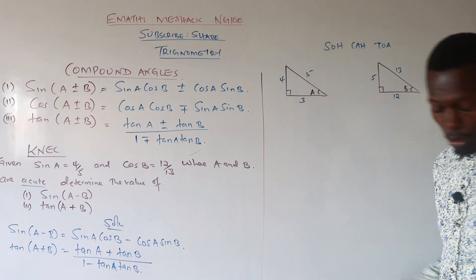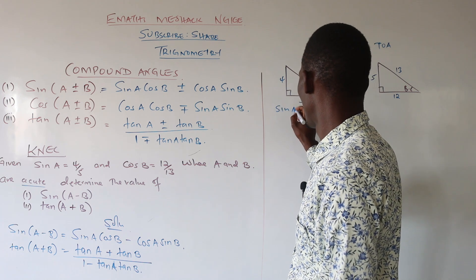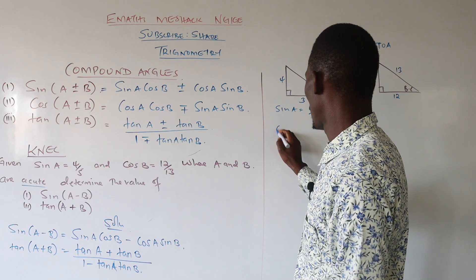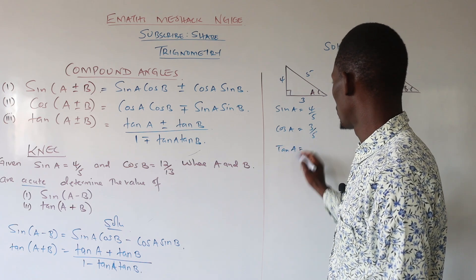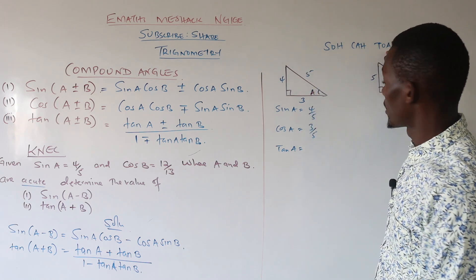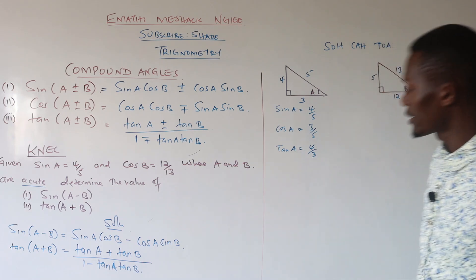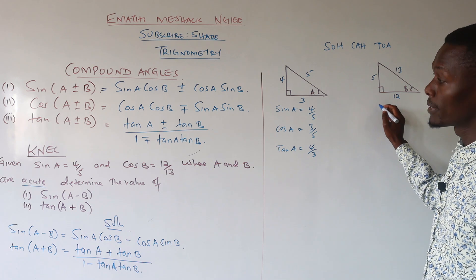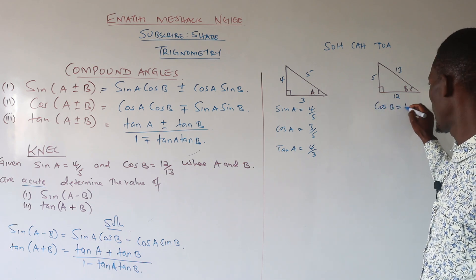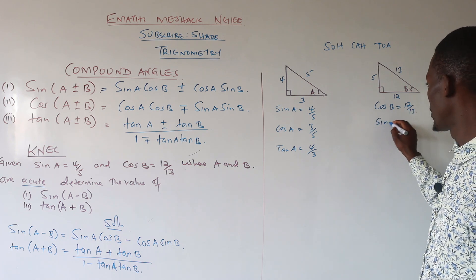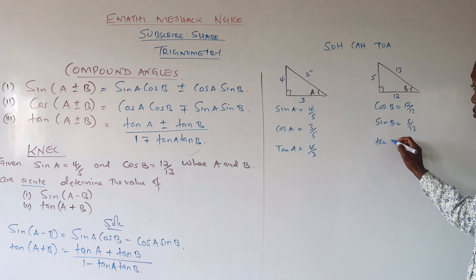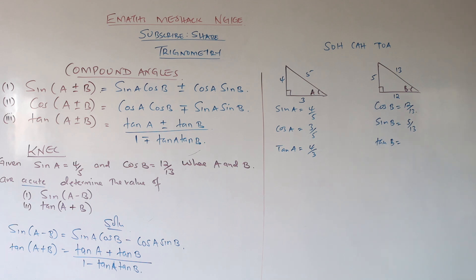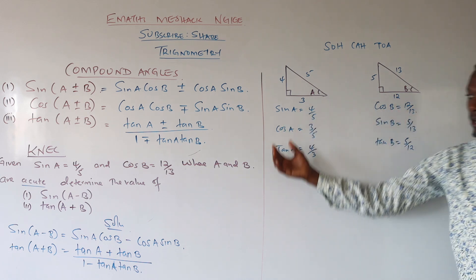Now we find all the other relationships. Sine of A is 4 over 5. Cosine of A is adjacent over hypotenuse: 3 over 5. Tan of A is opposite over adjacent: 4 over 3. For triangle B: cosine of B is 12 over 13 (given), sine of B is 5 over 13, and tan of B is 5 over 12.